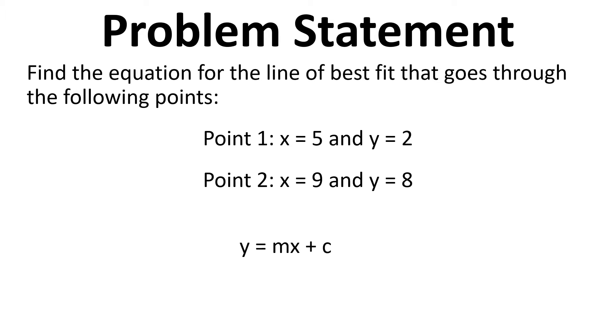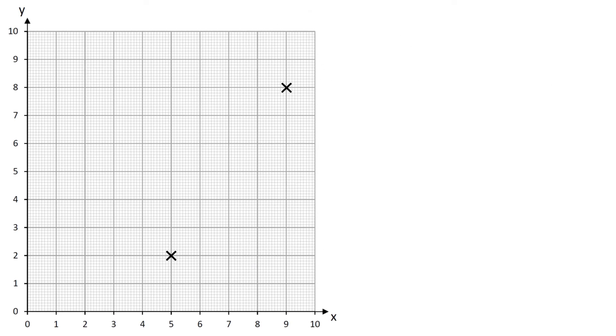We need to find the equation of the form y equals mx plus c, where m is the gradient and c is the intercept. Here are those two points plotted out on an xy graph, and that line that goes through both of those points is the line we need to find the equation for.